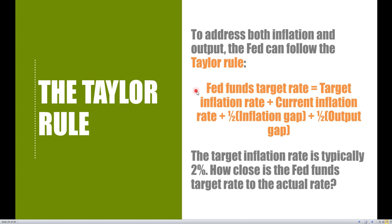There is an equation for the Taylor rule: the federal funds target rate is equal to the target inflation rate, plus the current inflation rate, plus one-half the inflation gap, plus one-half the output gap. Remember, the federal funds rate is the most important interest rate in the United States, and the Federal Reserve cannot directly set this rate — they only have a target for it, and this equation is how they arrive at that target.